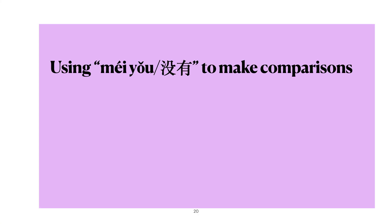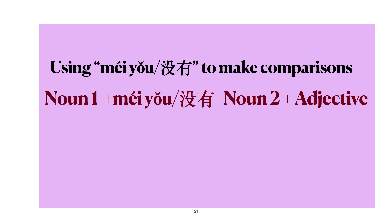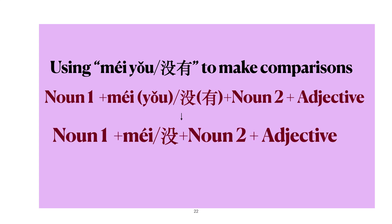In this lesson, we're going to learn how to use 没有 to make comparisons. The sentence structure is like this: noun1 plus 没有 plus noun2 plus adjective. You can also skip the word 有, and it becomes noun1 plus 没 plus noun2 plus adjective.